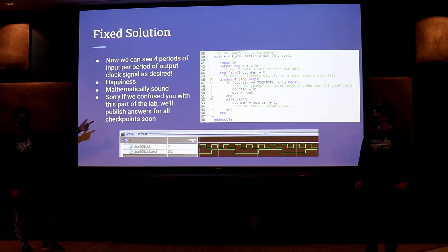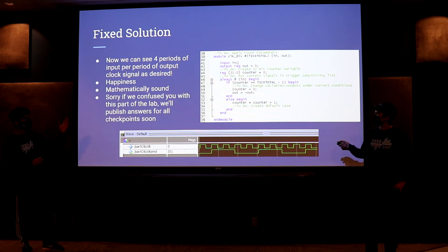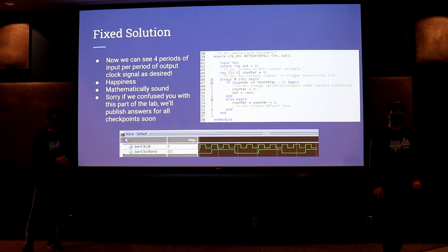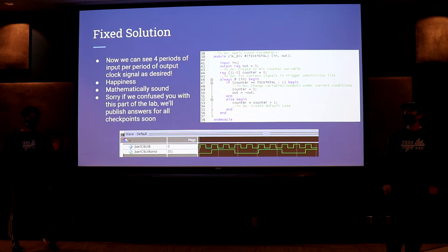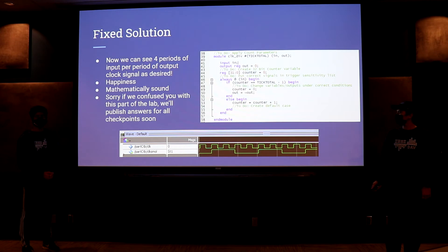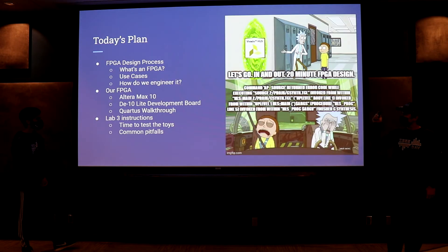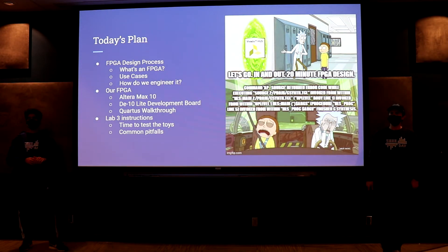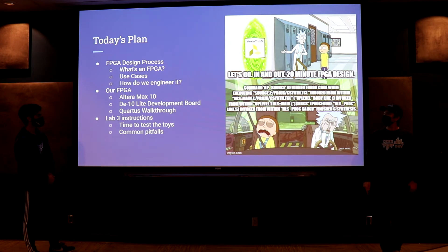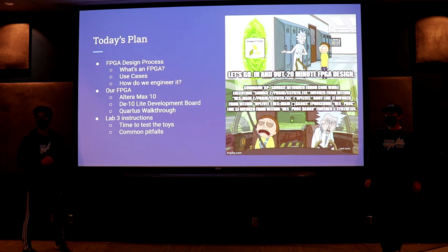In the corrected solution, I subtracted one from tick_total and also removed the positive edge restriction — using 'always @(in)' instead. 'Always @(in)' triggers on both positive and negative edges, which includes both pos edge and neg edge so it can handle odd numbers. If you put this code in and run a clock divider with an odd parameter — say going from 50 MHz to 1 kHz — it'll only be correct if you make these changes. Now we're done with the hard stuff and getting into the fun stuff: the hardware toys — $100 FPGAs.